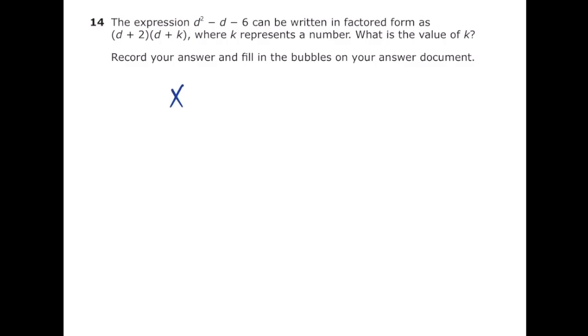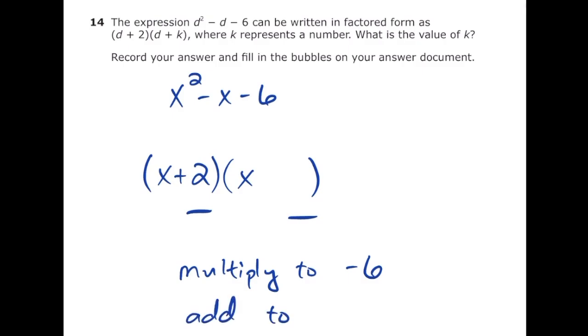So the first thing I'm going to do is I'm going to change the letter d to x, just because we're more accustomed to seeing that. And so I'm going to have x² - x - 6. So once I write that in factored form, they already gave us x + 2. And then we're looking for that second number in the parentheses. So I know that I need two numbers that are going to multiply to negative six and add to negative one, because there's really an understood one in front of that middle x.